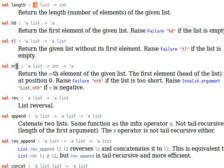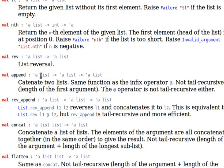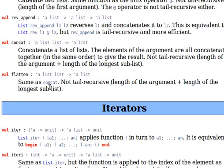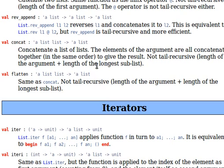We have nth — if you remember, we implemented a function element_at before, and that is already there for the OCaml list. We have a function called nth, and we pass it a list and an integer value. Then, rev to reverse a list, append to append two lists receiving two lists and returning a new list. Rev_append reverses L1 and concatenates it to L2. This is equivalent to list.reverse L1 appended to L2. Then concat, which concatenates a list of lists, and flatten to flatten a list of lists.